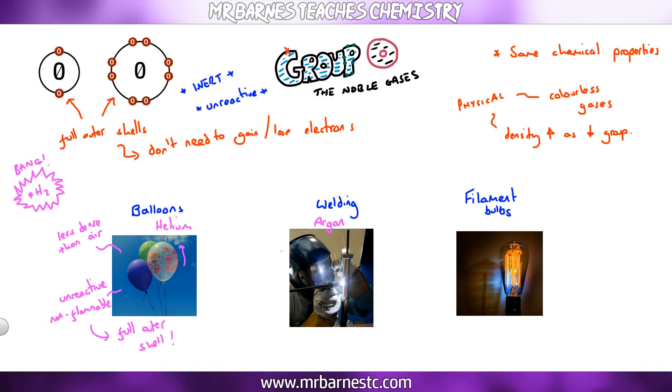If we have a look at welding, that's argon. The reason argon is used in welding is because it's inert, it provides an inert atmosphere. It means the oxygen doesn't react with the actual metal causing impurities. And again, why? Because it's got a full outer shell, doesn't need to gain or lose any electrons.